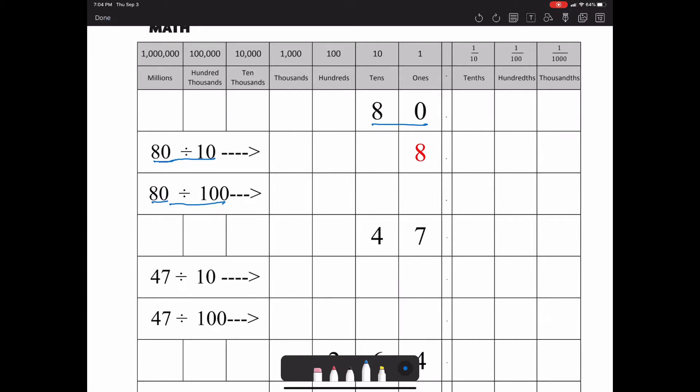But now that we're dividing, 80 divided by 10 shifts the other way. So if we divide by 10, we end up with 8 in the ones place. If we divide by 100, it's going to shift twice, so the 8 will end up in the tenths place.